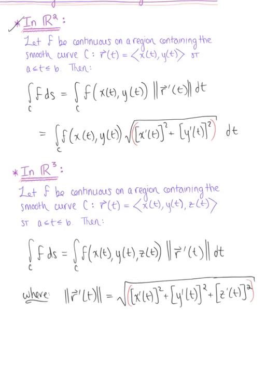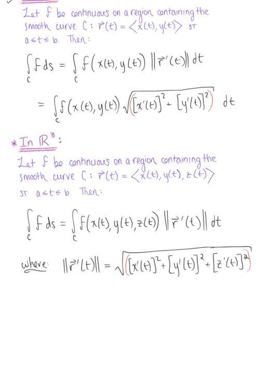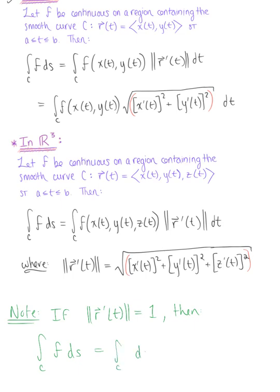One friendly reminder: use parentheses around that radicand. Also note that if the magnitude of your tangent vector is equal to 1, then the line integral will give you the length of C. That is, the line integral over C of f ds equals the integral over C of ds, which is simply the length of C.